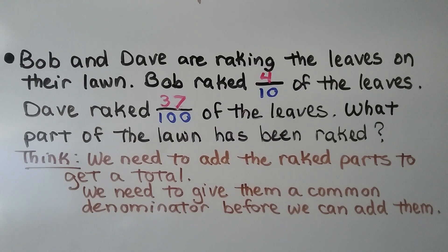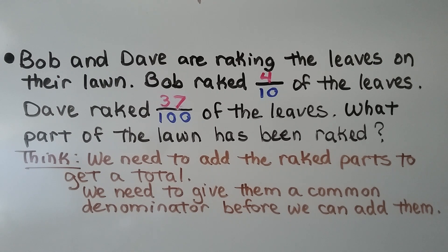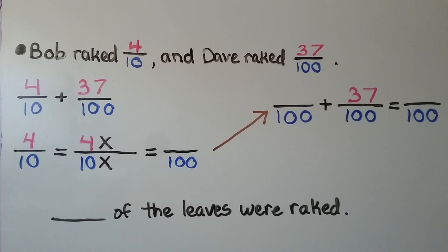Bob and Dave are raking the leaves on their lawn. Bob raked 4 tenths of the leaves, Dave raked 37 hundredths of the leaves. What part of the lawn has been raked? We think we need to add the raked parts to get a total. We need to give them a common denominator before we can add them. Bob raked 4 tenths and Dave raked 37 hundredths, so we have 4 tenths plus 37 hundredths.